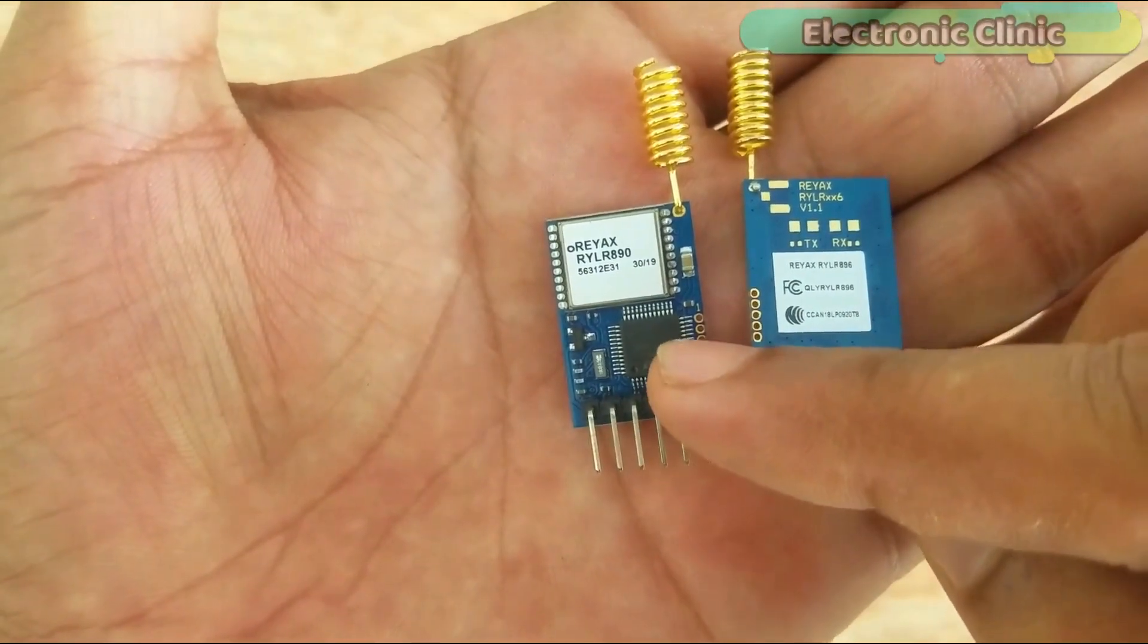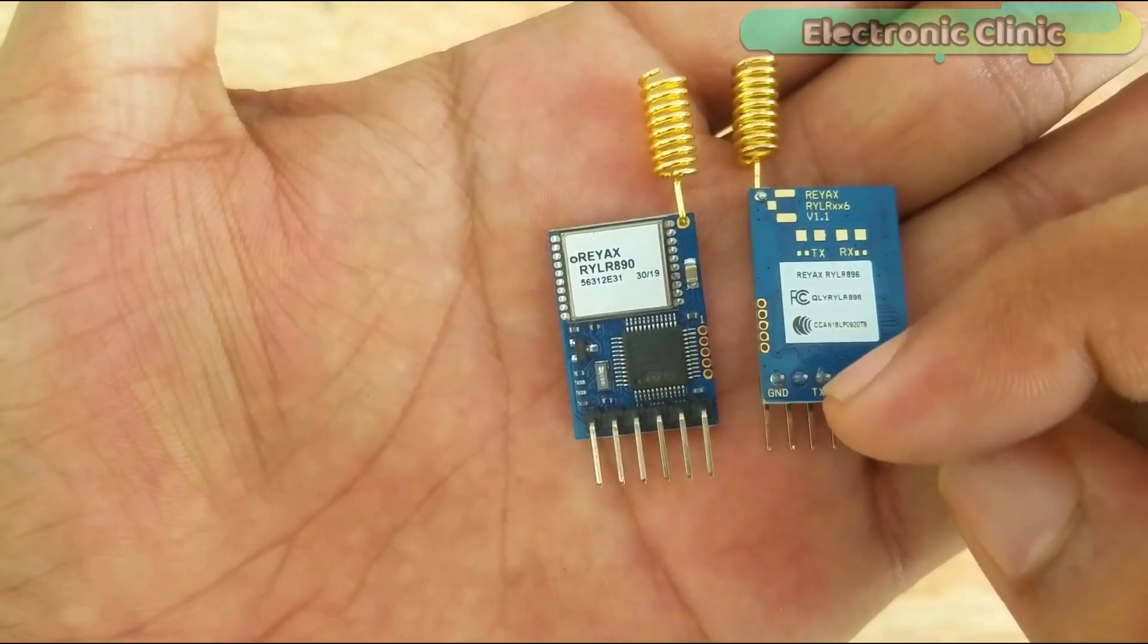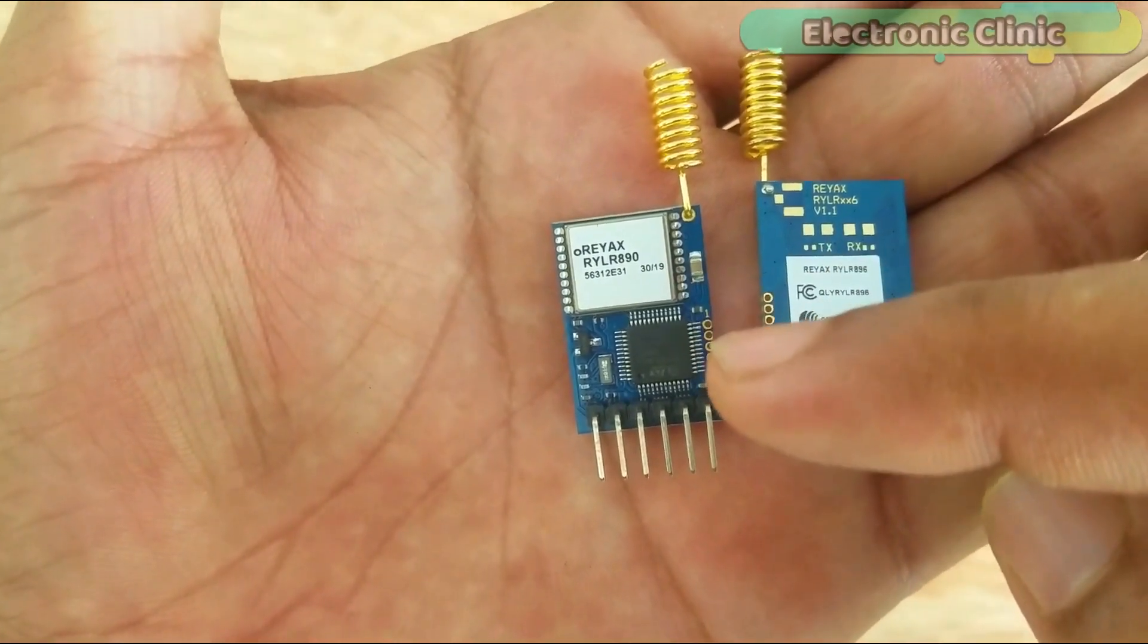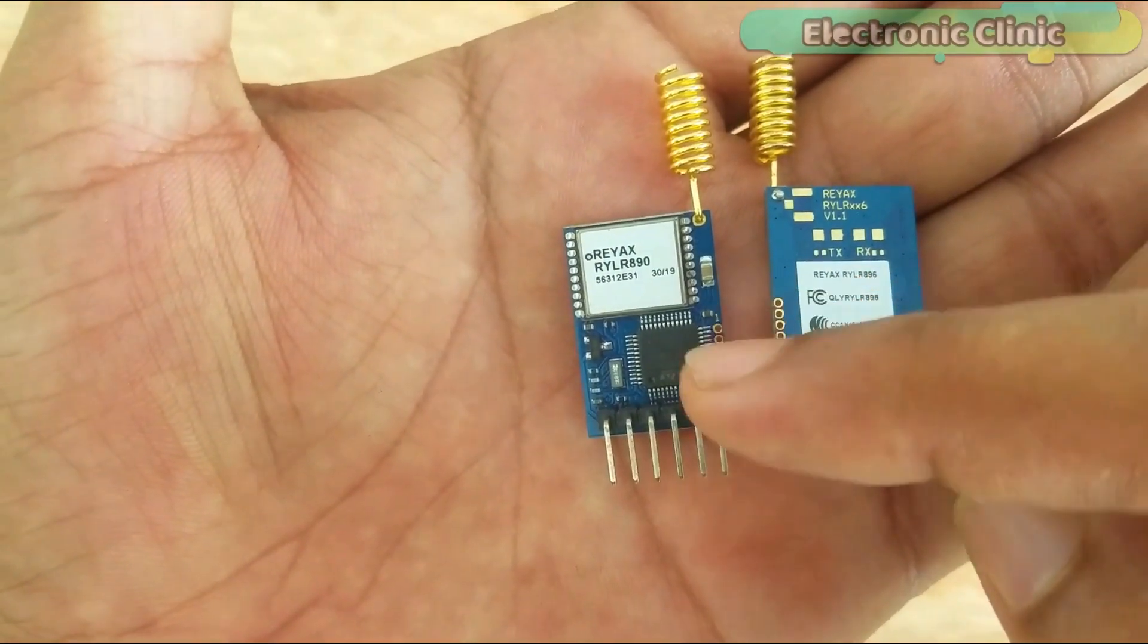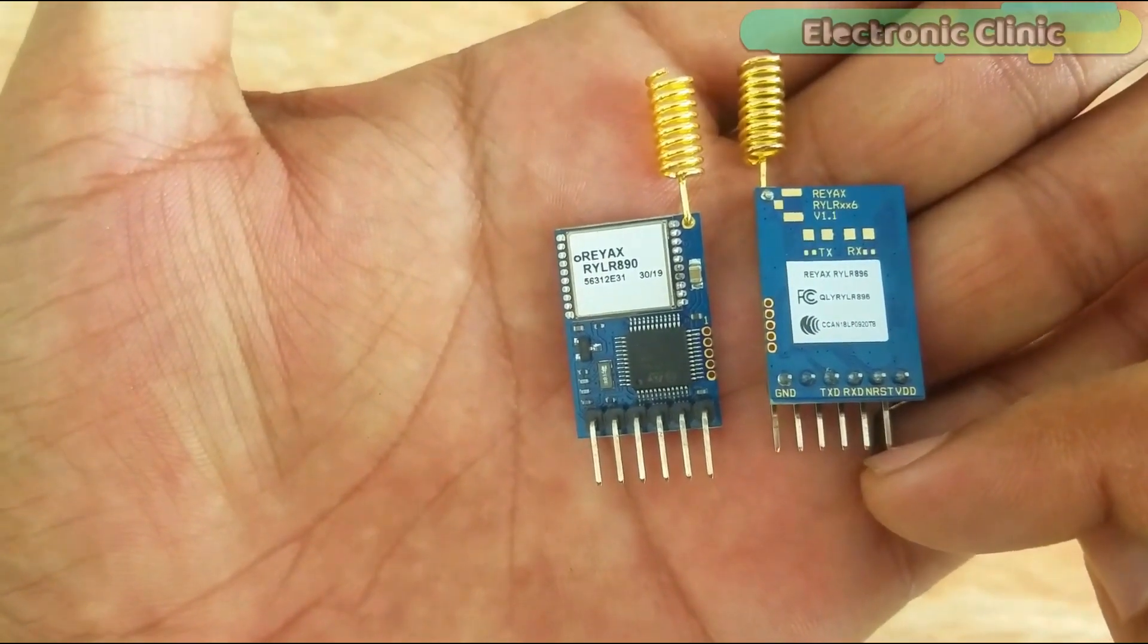This transceiver module has the processor which communicates with the Arduino through the serial communication. So the exchange of data between the RYLR890 and a microcontroller is controlled by this processor. Now let's open the data sheet and have a look at the specifications.